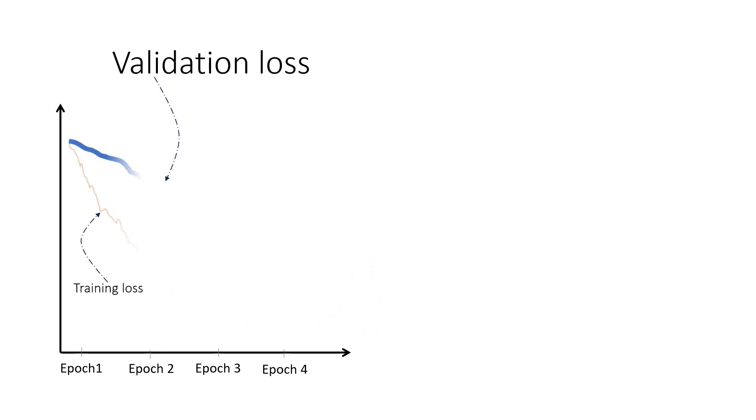But what if the validation loss remains high and is not coming down? This means that the model is overfitting. It has learned everything from the training data but not the right features, and that is why it is performing poorly on validation data and giving a very high validation loss.